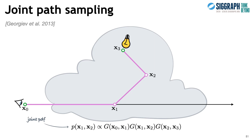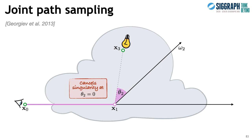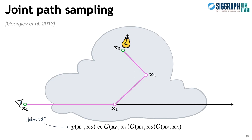When we marginalize this joint, we get that the first vertex along the camera ray should be sampled proportionally to the inverse distance to the light vertex. For the scattering direction at that vertex, we obtain a PDF that cancels the angular singularity. And the propagation distance determining the second vertex should be sampled proportionally to the inverse squared distance to the light — which is again the equiangular PDF. Chaining these sampling routines results in the desired joint distribution. In anisotropic scattering media, we also want to include the phase function into the joint. Analytical marginalization is not possible in this case, but a compact tabulation is still possible by exploiting various symmetries in the geometric configurations.